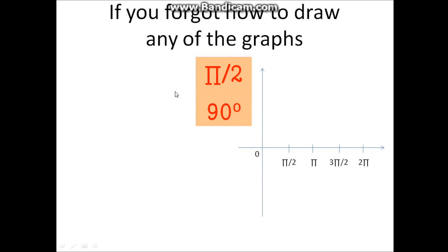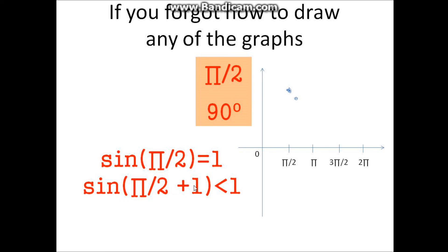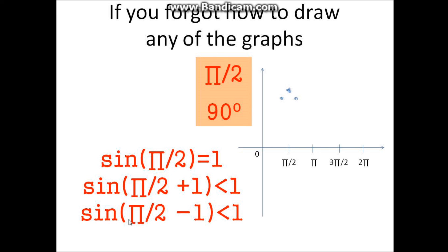If you forget how to draw any of the graphs, all you have to do is sub in some values. If you're using radians it's pi over two; if you're using degrees it's 90 degrees. In this case I'm using radians. You just sub it into sine — sine of pi over two equals one, so you plot that here. Then you add one to this: sine of pi over two plus one is actually less than one. Then you do pi over two minus one — sine of pi over two minus one is less than one too. You can see this curve, and by memory you should know the curve looks something like this.